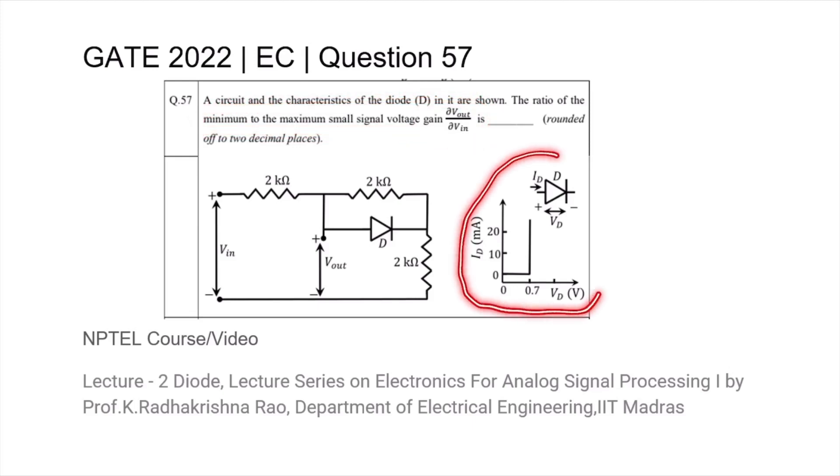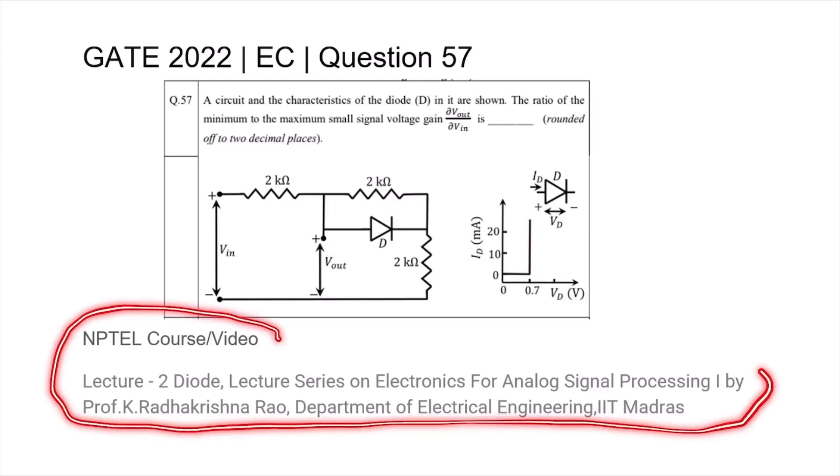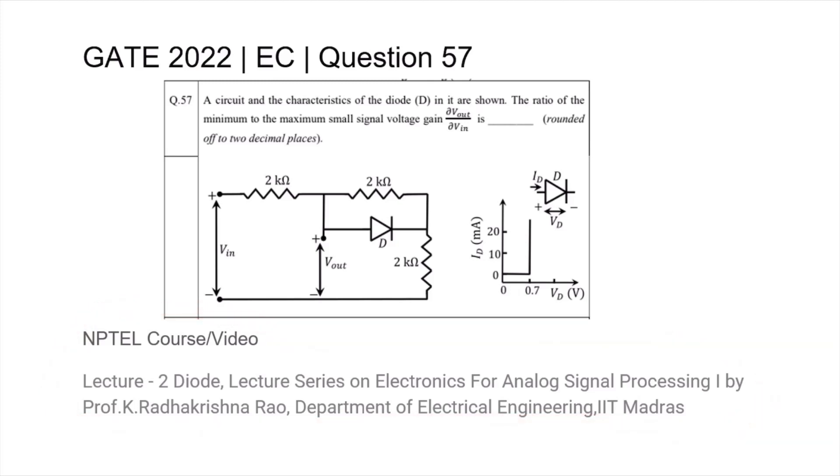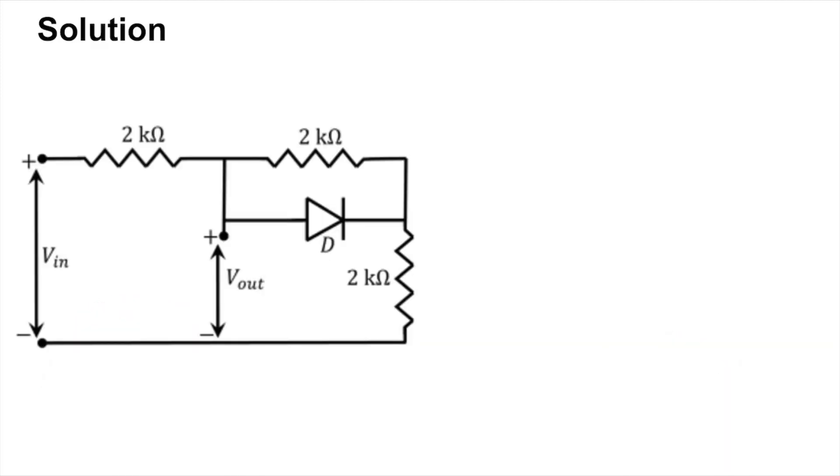The diode is assumed to be a model of open circuit till 0.7 volt and then a voltage source of 0.7 volt afterwards. Underneath the quiz you will find the title of the NPTEL course or video relevant to this topic.